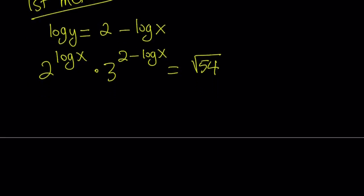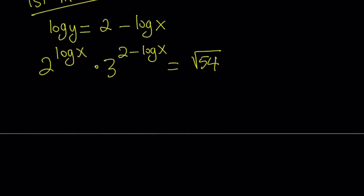Let's go ahead and arrange this a little bit. I can write this as 2 to the power log x times 3 to the second divided by 3 to the power log x. So 3 to the second power can be written as 9. And we can just write this in the denominator because the exponent is negative.